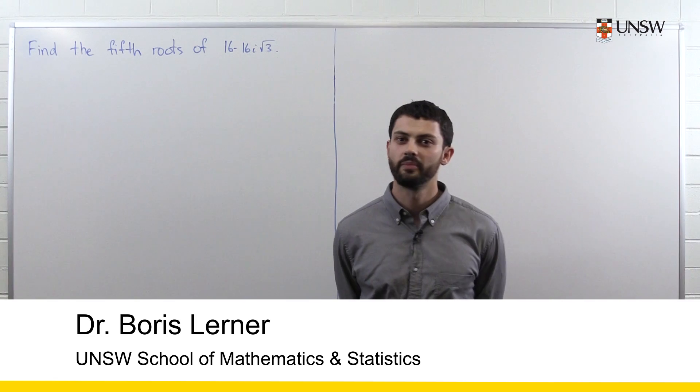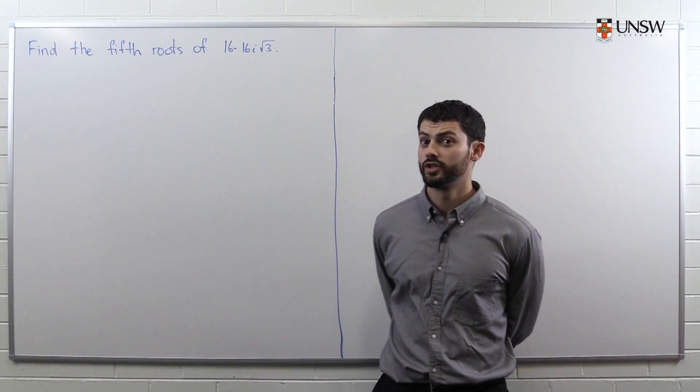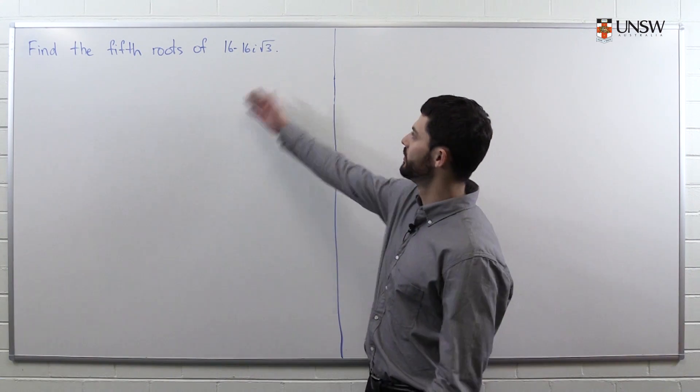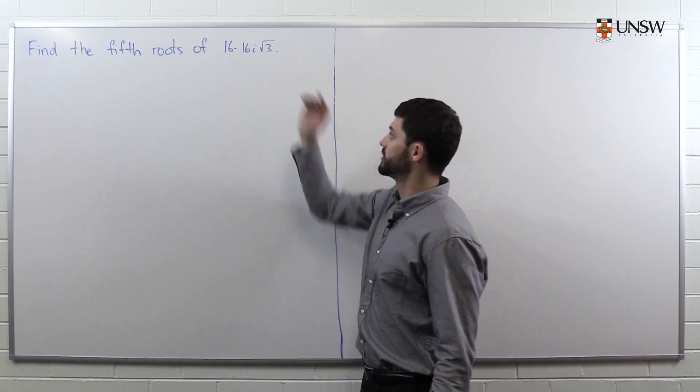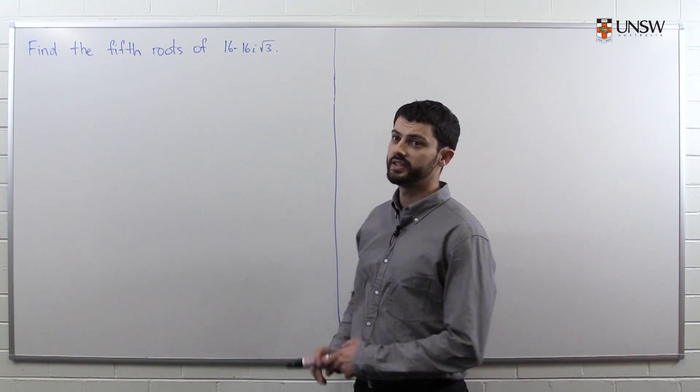Hi, my name is Boris. You might remember me from such videos as finding the area normal to a parallelogram and proving the complex conjugate root theorem. Today we're going to look at the following problem. We're asked to find the fifth roots of this complex number, 16 minus 16i√3.